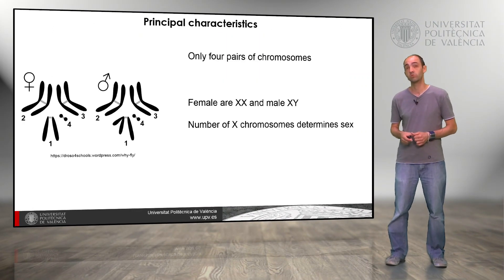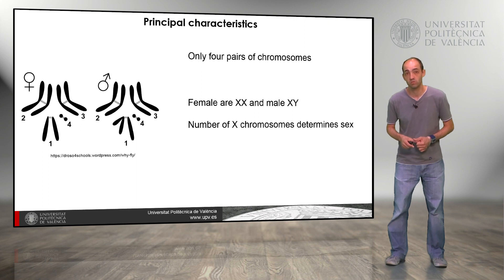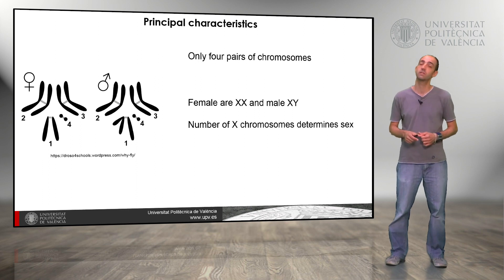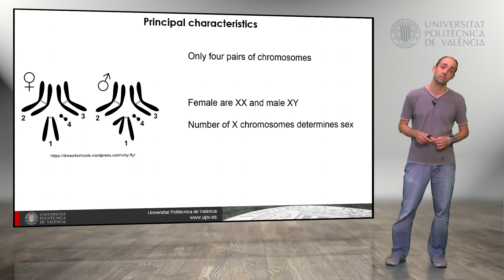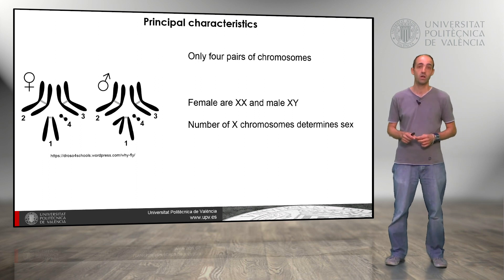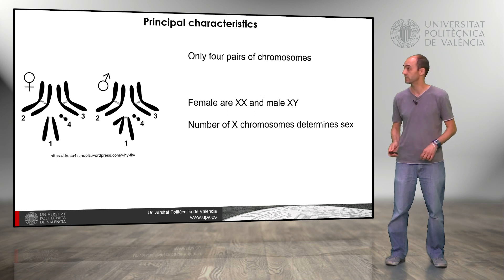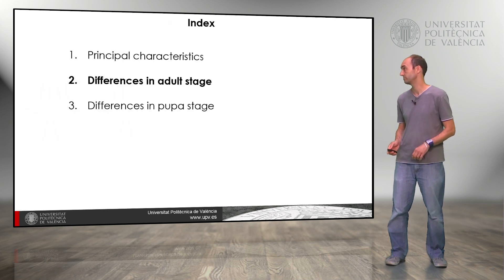Drosophila has just four pairs of chromosomes. The female is XX and the male is XY. The number of X chromosomes determines the sex in this insect.